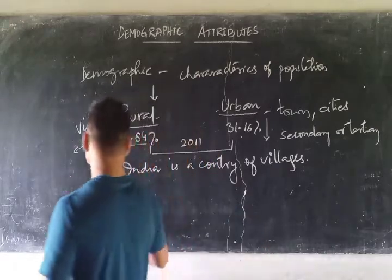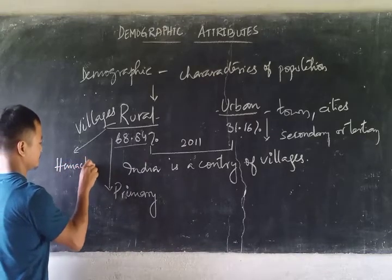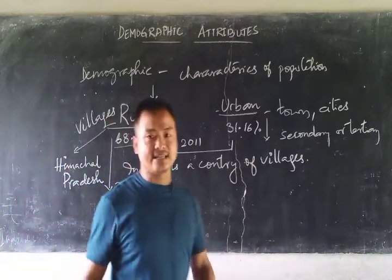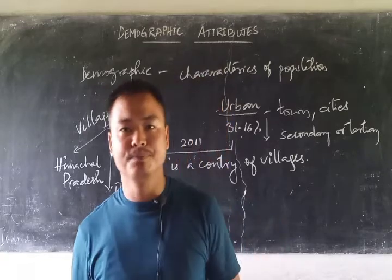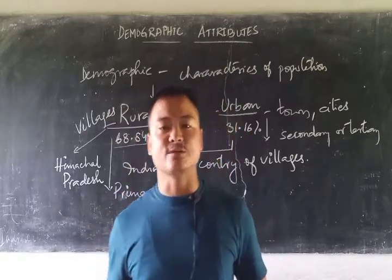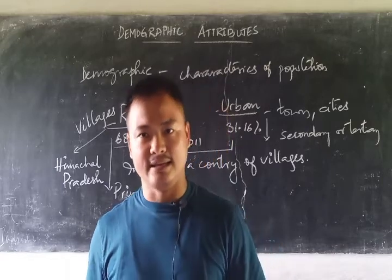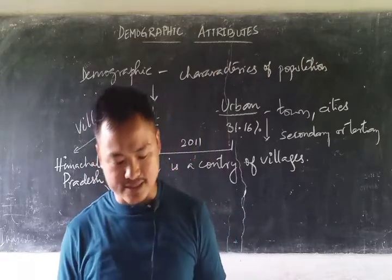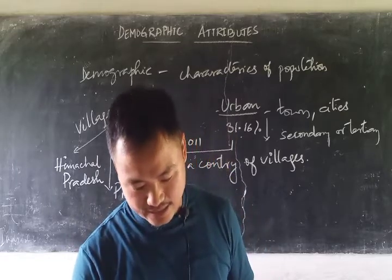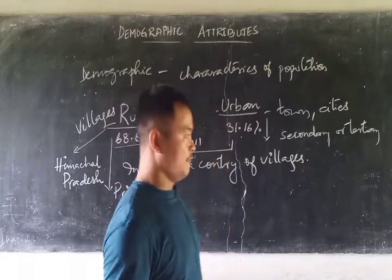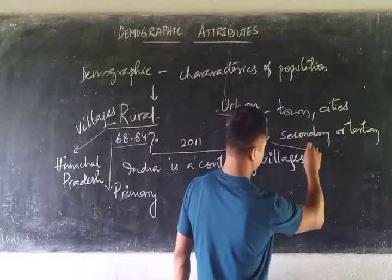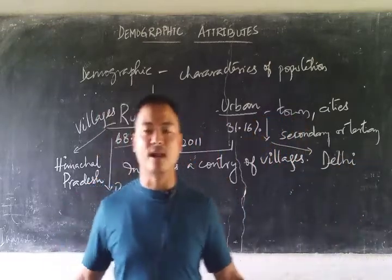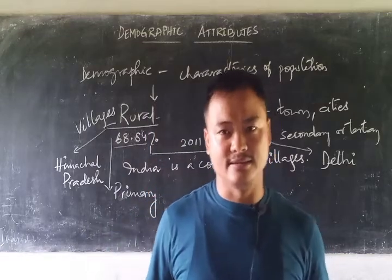If we look at rural population, Himachal Pradesh is one of the states in India where rural population is maximum — in fact, it is the state with the largest rural population in India. On the other hand, if you want a good example for urban population, you can take Delhi, which has the largest urbanization due to the large amount of migration that takes place to this union territory or national capital.